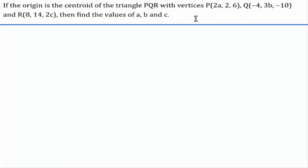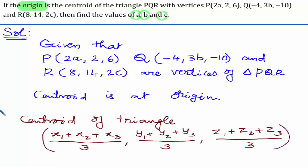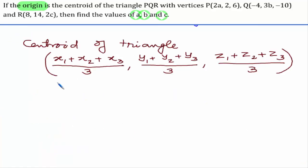In this problem, the three vertices of triangle PQR are given and the centroid is at the origin. We have to find out the values of the variables A, B, and C. Given P(2A, 2, 6), Q(-4, 3B, -10), and R(8, 14, 2C). The centroid formula is (X1 + X2 + X3)/3, (Y1 + Y2 + Y3)/3, (Z1 + Z2 + Z3)/3.